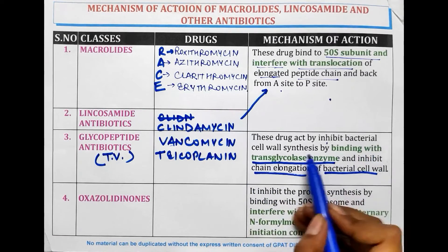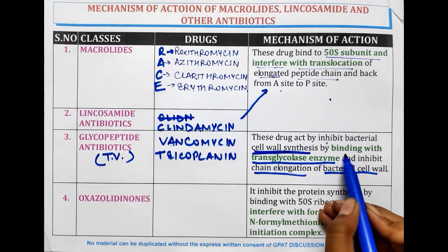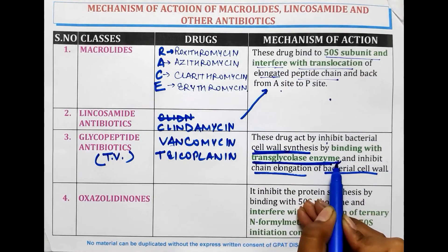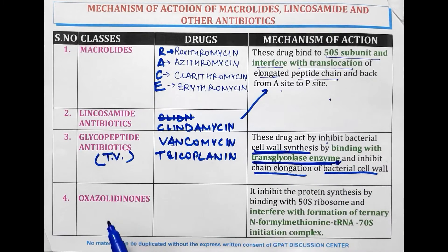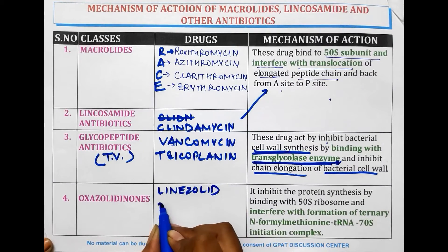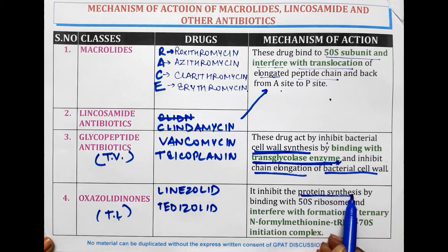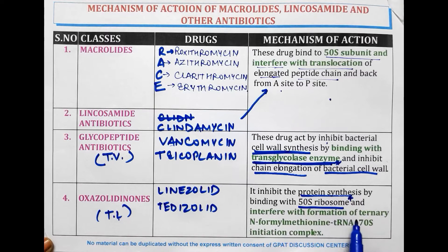These drugs inhibit bacterial cell wall synthesis, not protein synthesis. Cell wall synthesis is inhibited as the drug binds with the transglycosylase enzyme and inhibits chain elongation of the bacterial cell wall. The next category is Oxazolidinones, which contains Linezolid and Tedizolid. These oxazolidinones inhibit protein synthesis by binding with the 50S ribosome and interfering with the formation of the ternary formyl-methionine tRNA 70S initiation complex.